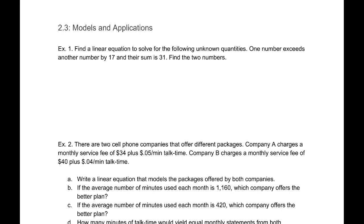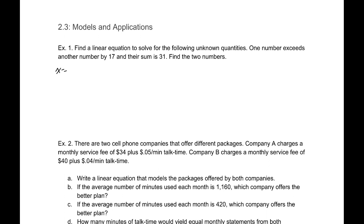One number exceeds another number by 17 and their sum is 31. We don't know what those numbers are. We're not given a variable, we have to come up with the equation. I'm going to call x my first number.